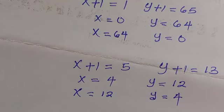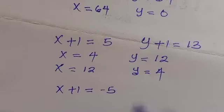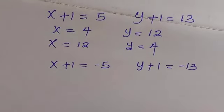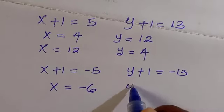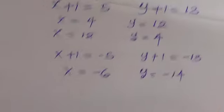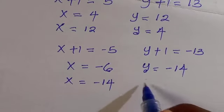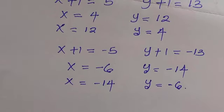For the third case, using the negative factor pairs: when x plus 1 equals negative 5 and y plus 1 equals negative 13, we get x equals negative 6 and y equals negative 14. Similarly, we also have x equals negative 14 and y equals negative 6.